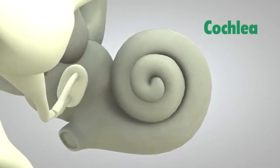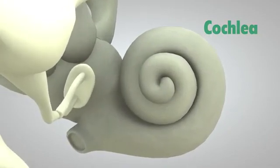The cochlea is shaped like a snail and is the size of a garden pea. It is filled with fluid, and the sound vibrations make this fluid ripple, which creates waves.